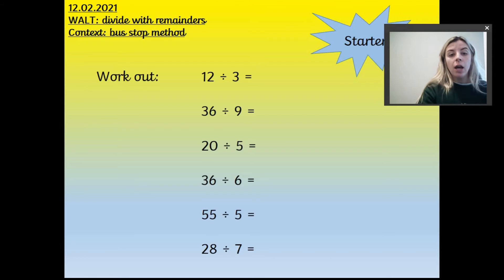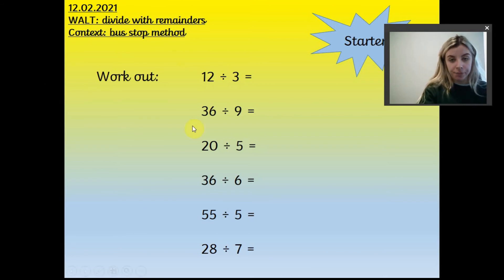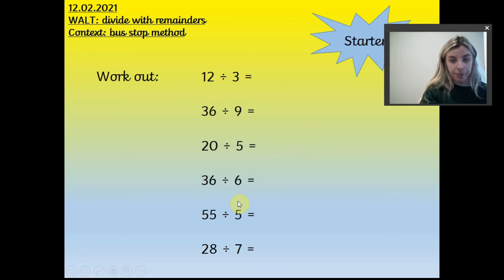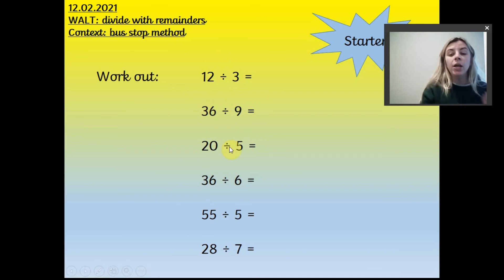Like always, we've got a starter on the screen. I'd like you to pause here, then write the date and the WALT neatly, and have a go at the starter. The starter is like yesterday's — you can use the bus stop method to work it out if you want to, but you don't have to. You can count in multiples of the smaller number until you reach the big number, because each big number is a multiple of the smaller number.